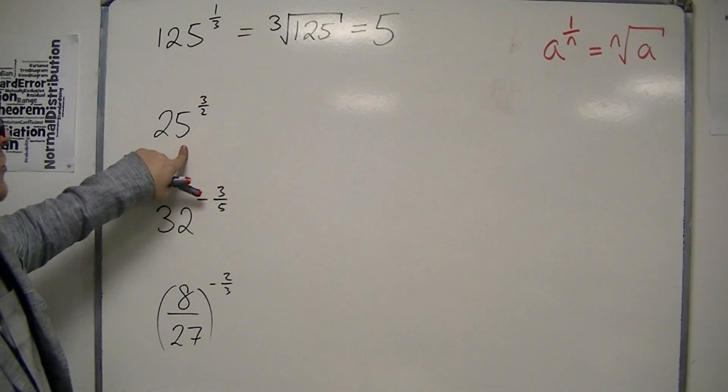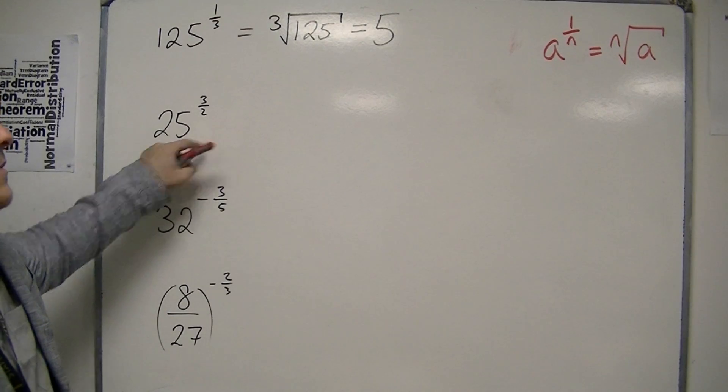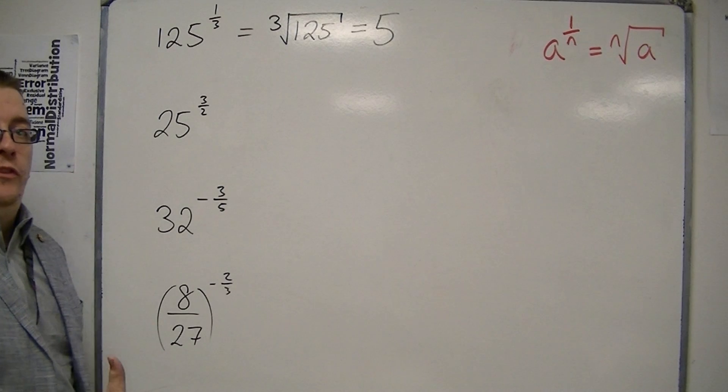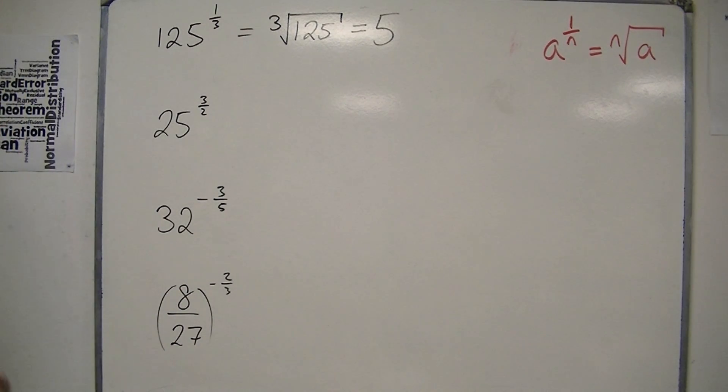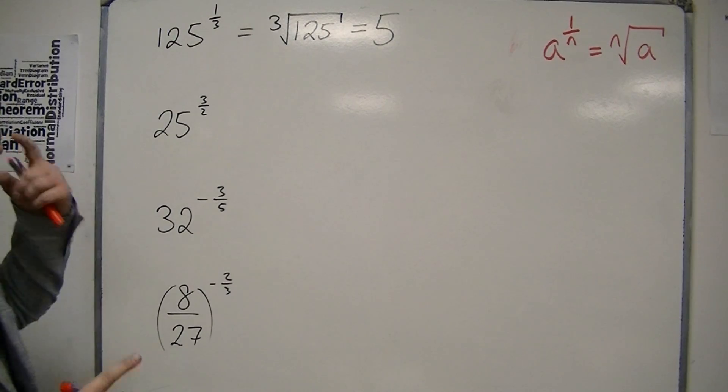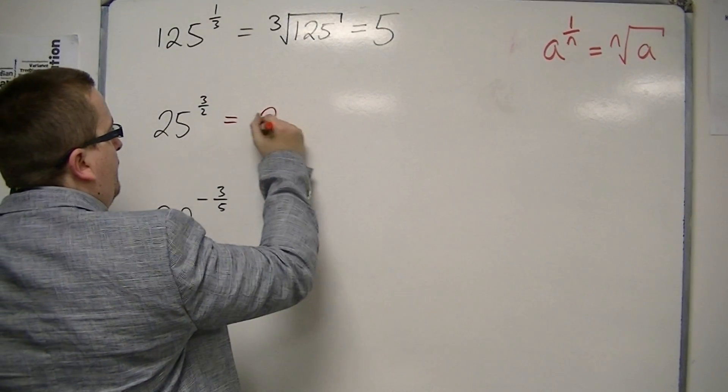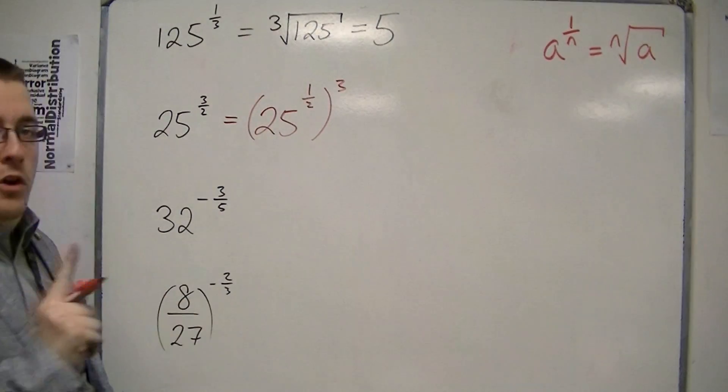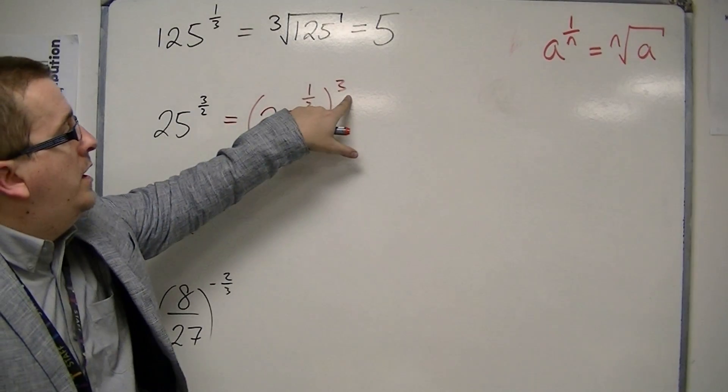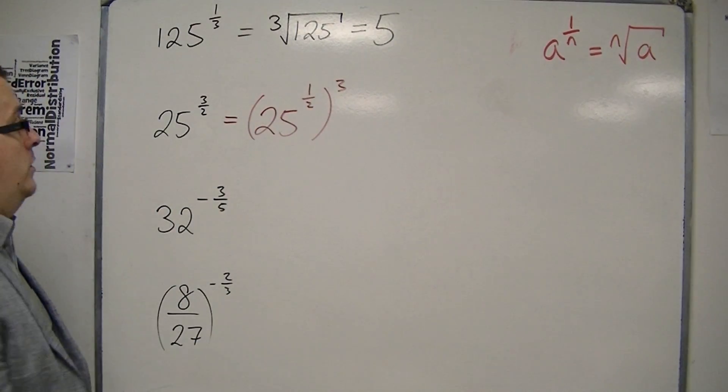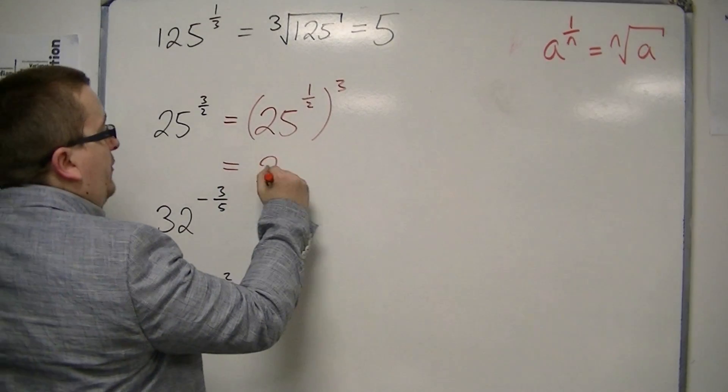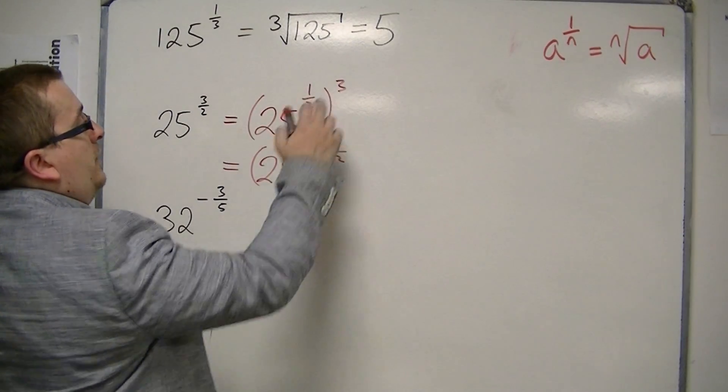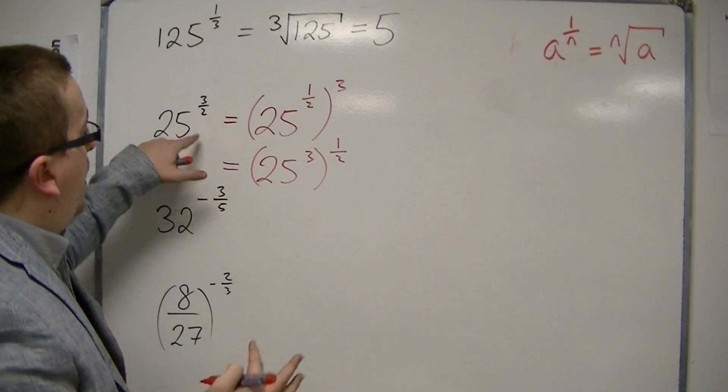Now we've got 25 to the three halves. Is that the three halves root? Not quite. What you've got to think of here is using one of the laws that said this is 25 to the half cubed, because three halves is the same as one half times three. Or you could have seen this as 25 cubed to the half, because three times a half is the same as a half times three. Both get you three halves.